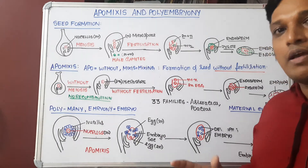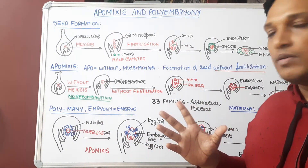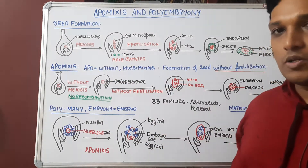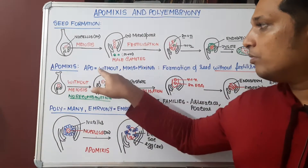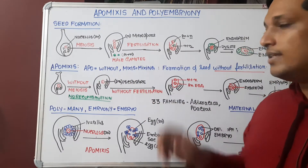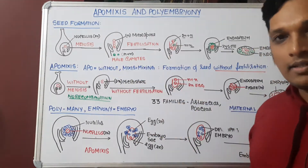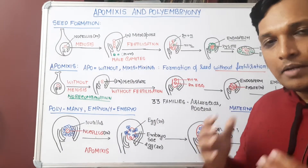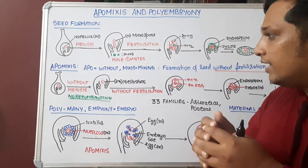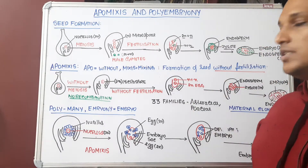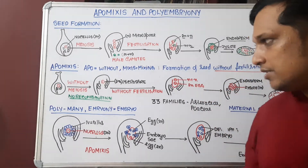But without any fusion, without any sexual reproduction, there are about 33 families of flowering plants that can generate a seed. This concept is called apomixis. 'Apo' means without, 'mixis' refers to mixing — so without mixing, that means without any fusion of sperm with the egg, there is seed formation in plants. So apomixis is the formation of seed without fertilization.